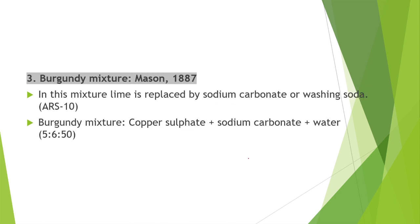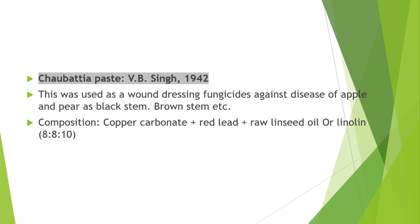Burgundy mixture was discovered by Maison in 1887, where lime is replaced by sodium carbonate or washing soda. Its composition is copper sulphate + sodium carbonate + water in a 5:6:15 ratio. Chobothia paste was discovered by V.B. Singh in 1942, used as a wound dressing fungicide against diseases of apple and pear. Its composition is copper carbonate, red lead, and linseed oil in an 8:8:10 ratio.